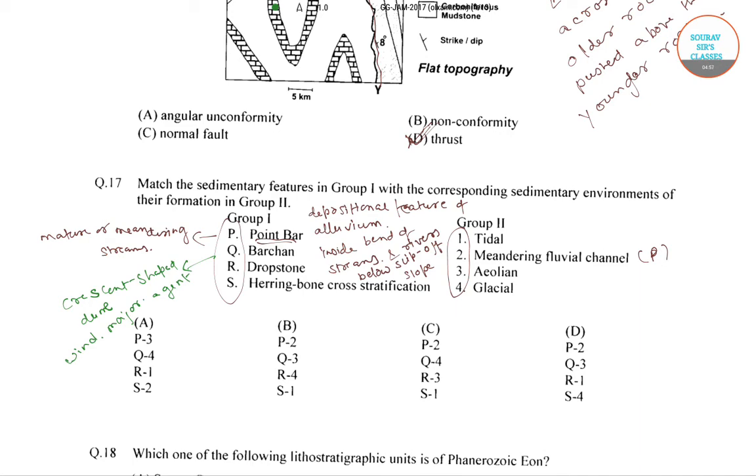With Q, it would be aeolian. The sedimentary environment corresponding to barchan is aeolian, as aeolian environments include those environments where wind is the major agent of sediment deposition. First is P-2, then it is Q-3.